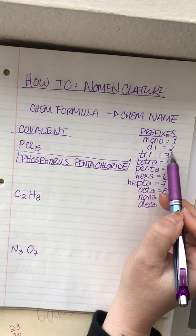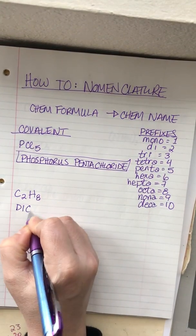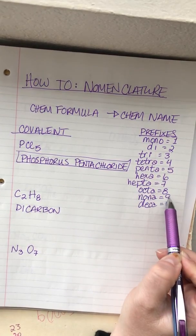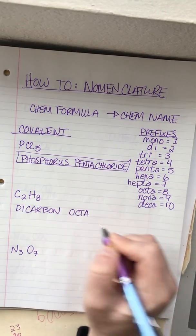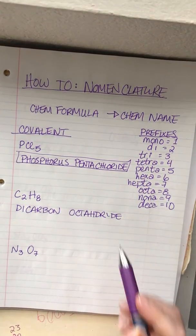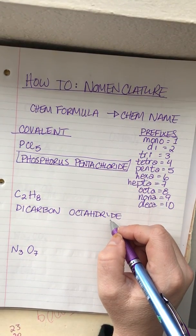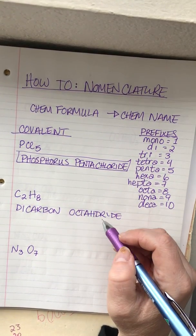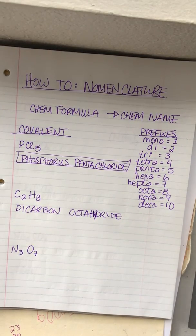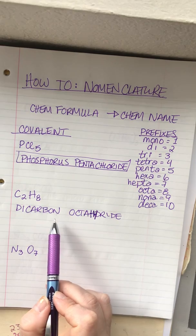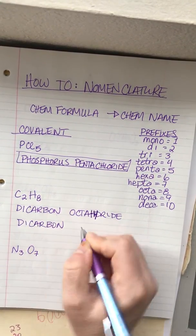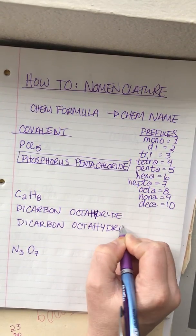Next we have C₂H₈. Two is 'di,' so this is dicarbon. Eight for hydrogen means we're going to have 'octa' out front, giving octahydride. The chemical name is dicarbon octahydride — we use the regular non-metal name for the first element and the anionic form for the second.